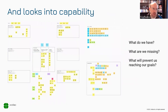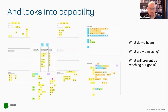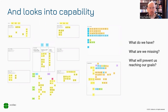We also need to understand and look at capabilities. If we understand what outcomes we want, we can break down and look at what capabilities we need in order to achieve those outcomes. That will in turn give us the ability to build out the right capabilities, take the right courses, and bring the right skills to the table to help us reach the outcomes we're looking for.